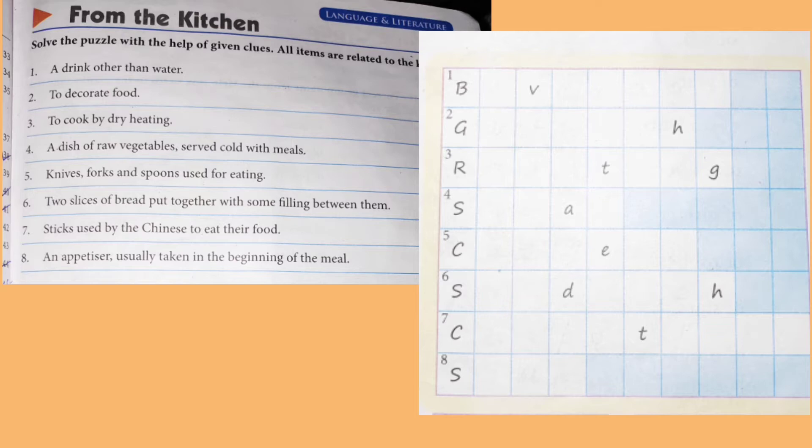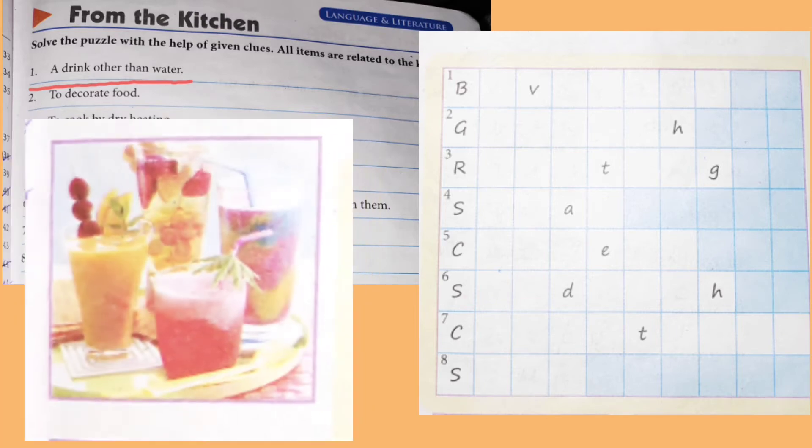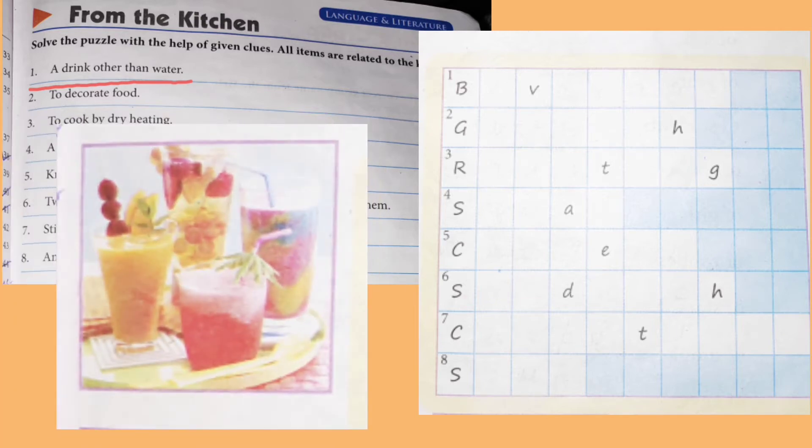So the first one is a drink other than water. Drink other than water, like tea, coffee. What do we call it? So it is called a beverage. Beverage spelling is B-E, V is already written, E-R-A-G-E, beverage.